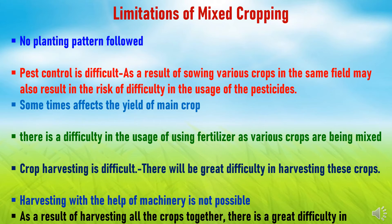There are some limitations associated with mixed cropping. Since seeds of various crops are mixed and sown randomly without following any planting pattern such as row spacing or plant-to-plant spacing, this causes trouble in field cultivation practices. Because of mixing of various crops, there is sometimes difficulty in controlling pests, as we cannot apply pesticides selectively due to different crops having different responses to insects and pests.